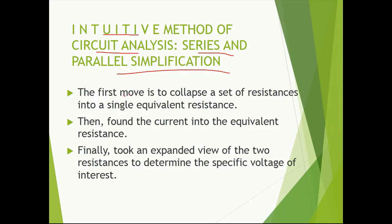The first step is to collapse a set of resistances into a single equivalent resistance. That means if we have a number of resistors in our circuit, we can merge them by using whether they are in series or in parallel with each other, so as to calculate the value of equivalent resistance.